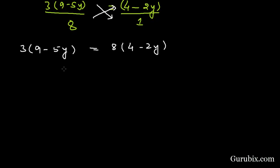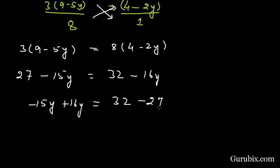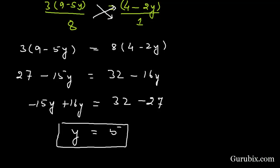Further solving: 3 × 9 = 27, 3 × 5y = 15y on the left; 8 × 4 = 32, 8 × 2y = 16y on the right. Taking -16y to the left hand side: -15y + 16y = 32 - 27, so y = 5. The value of y is 5.